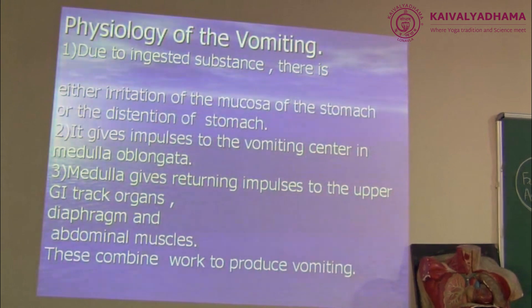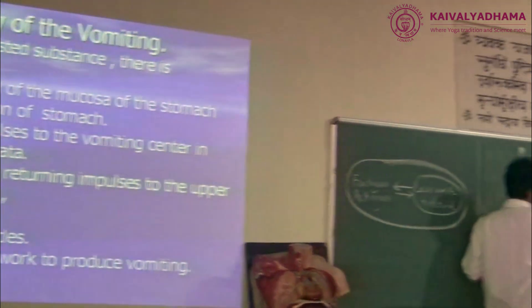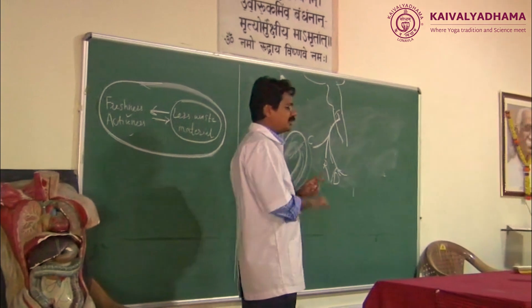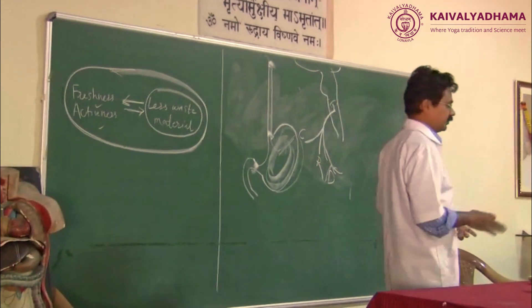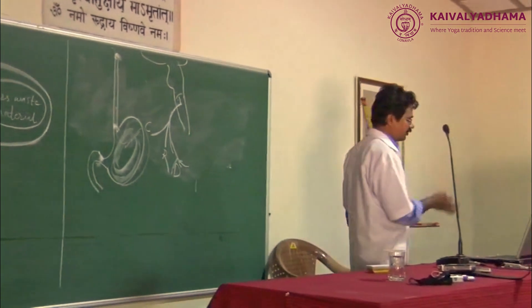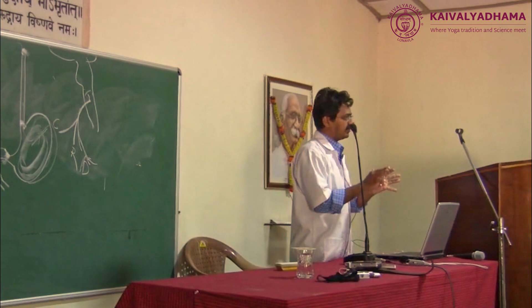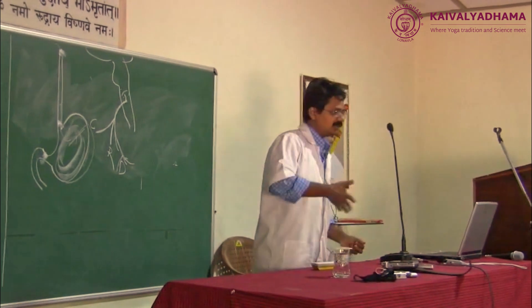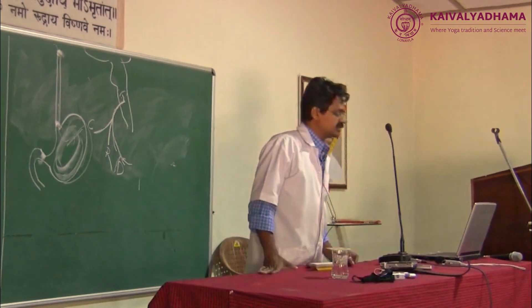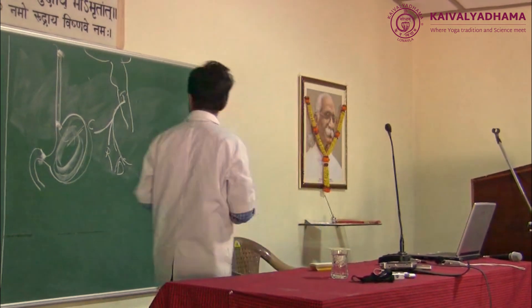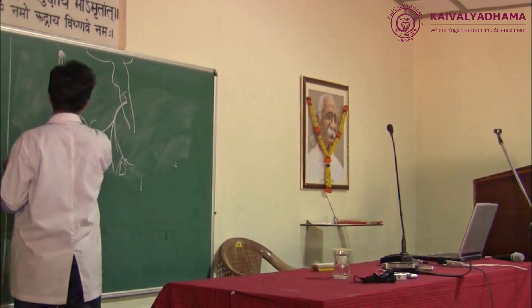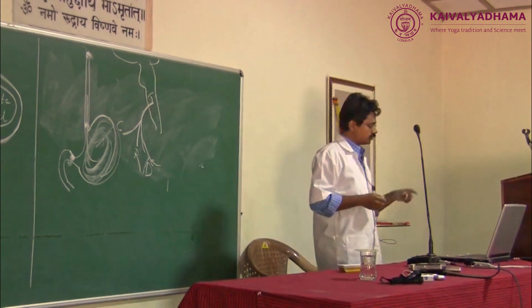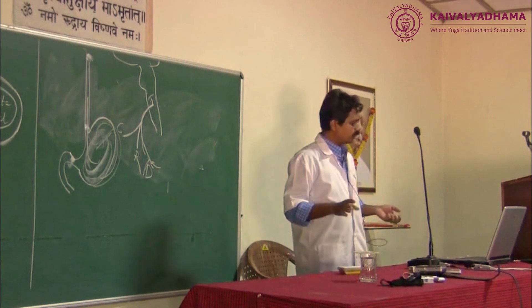When the vagus nerve is stimulated throughout, it works in the respiratory system, the circulatory system, and the digestive system overall. So wherever the vagus nerve supplies, there is action. Whenever there is a reflex of vomiting, we are generating that reflex by adding water in the stomach, and the result and effect is on all the systems since the overall vagus system is activated. There is then an act of vomiting — throwing off all this liquid to the outside. The medulla gives returning impulses to the upper GI tract organs, diaphragm, and upper muscles, and this combination produces vomiting.